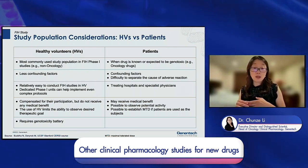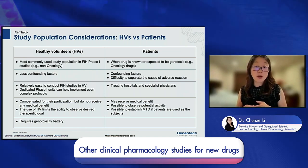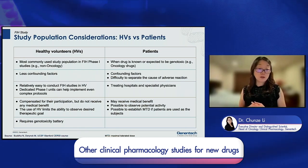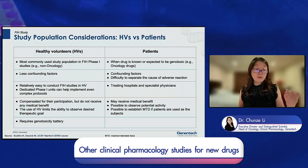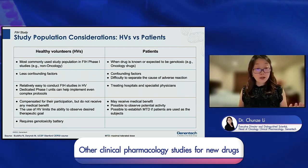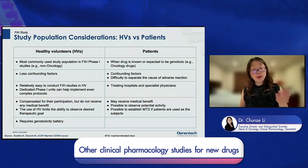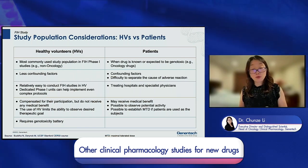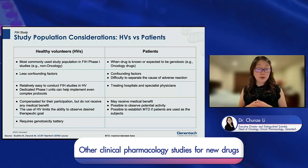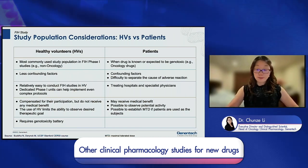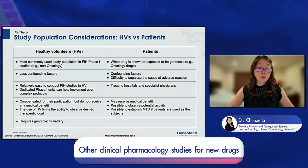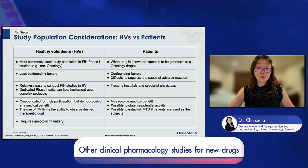In contrast, patient studies usually need to be conducted in hospitals by specialized physicians. Given that healthy volunteers won't gain any medical benefit, they are compensated for their participation. Patients, on the other hand, may potentially benefit from the treatment, so there are different ethical and operational considerations. For healthy volunteer studies, you will also typically require genotoxicity batteries to be completed first.